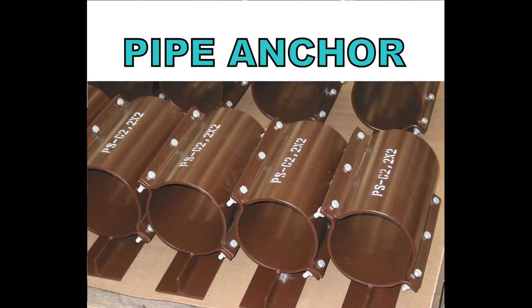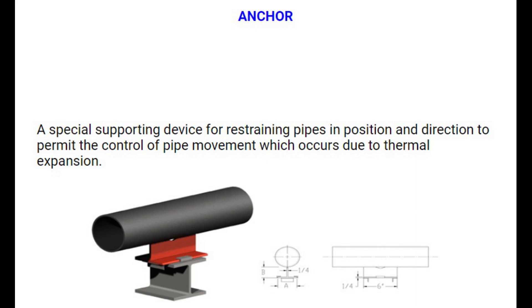Number 1: Anchor. Pipe Anchor Supporters are a special supporting device for restraining pipes in position and direction to permit the control of pipe movement which occurs due to thermal expansion.